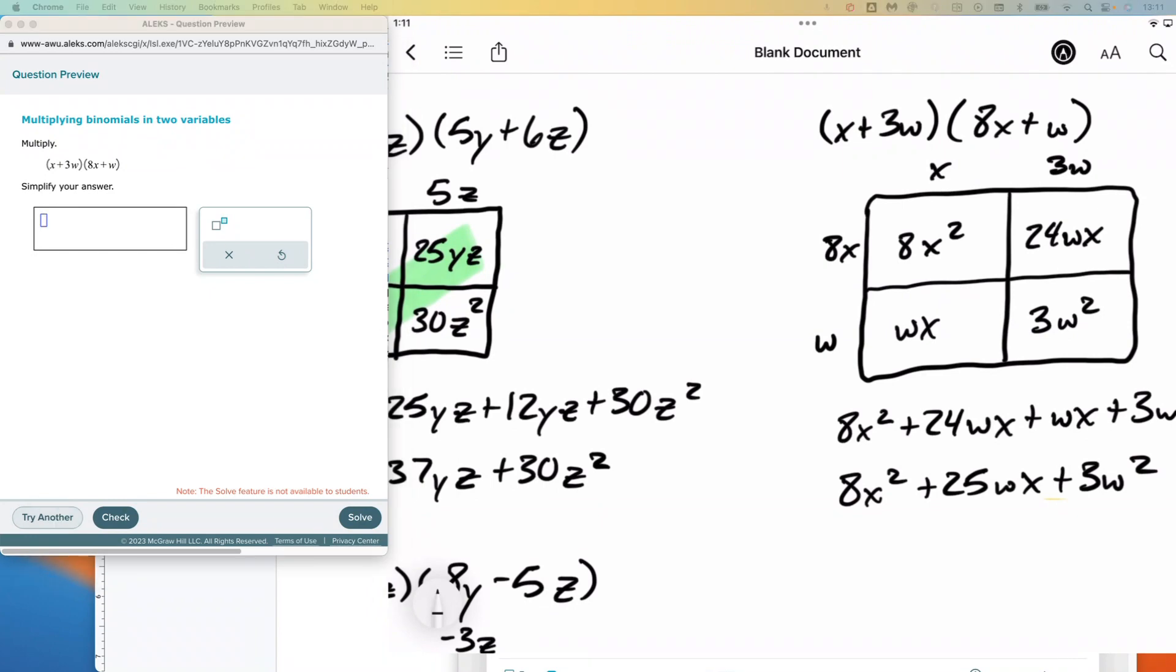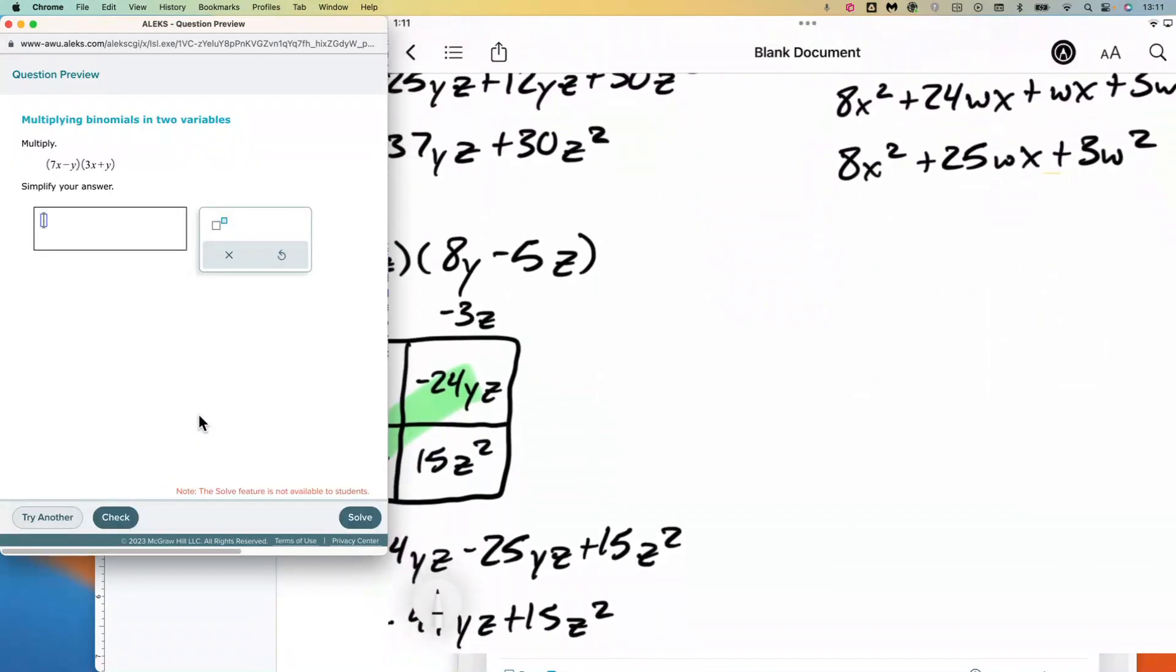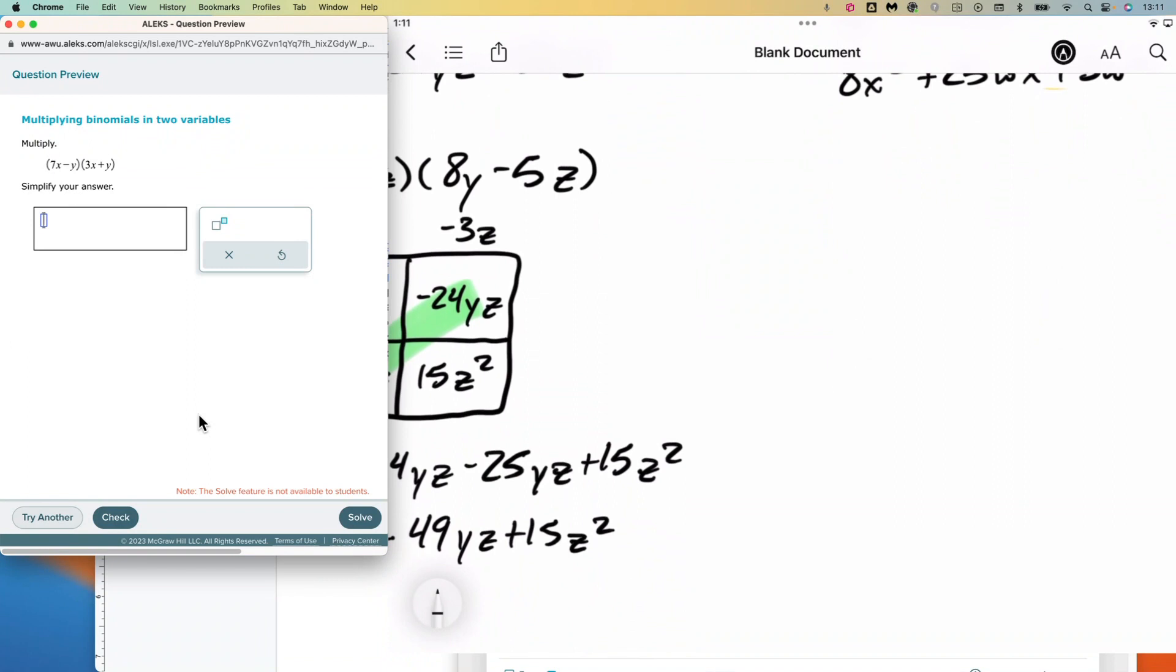And I think we have time in this video for one more. Let's do that. One more. And we will do 7x minus y by 3x plus y. 7x, negative y, 3x, y.